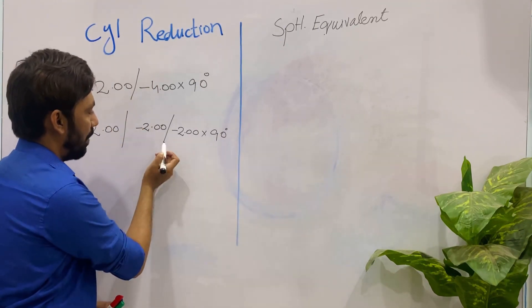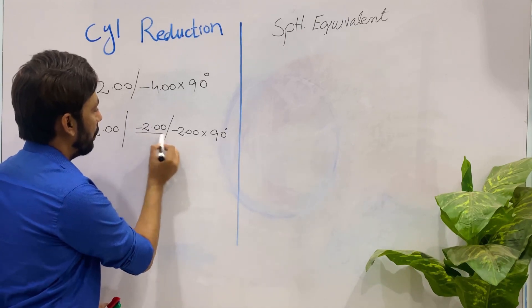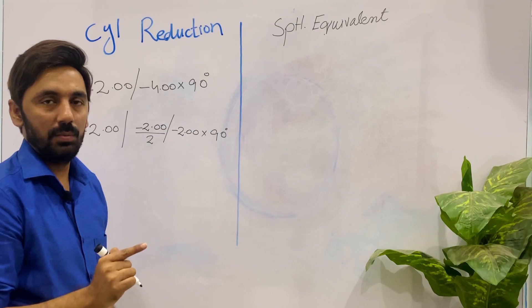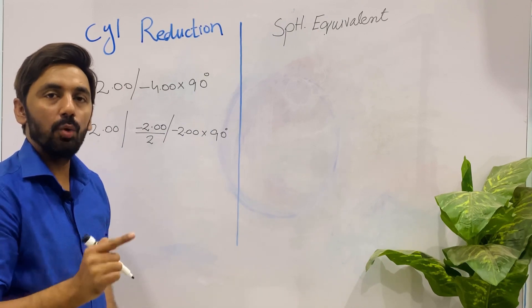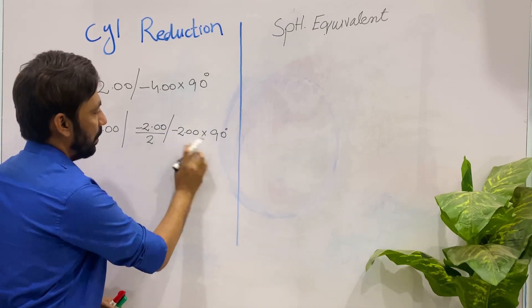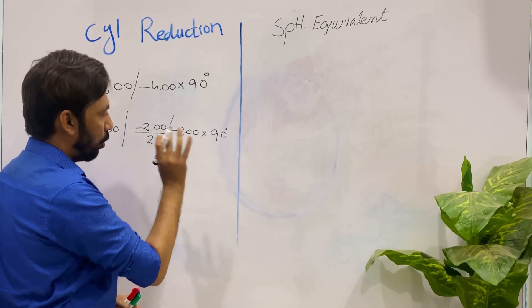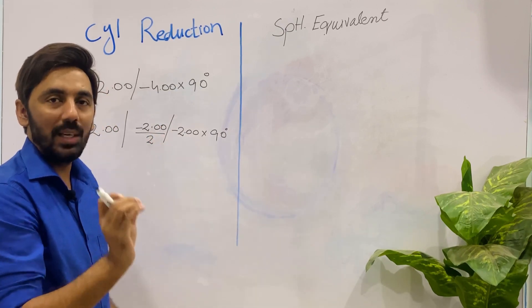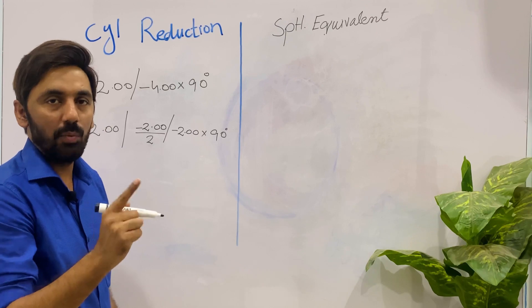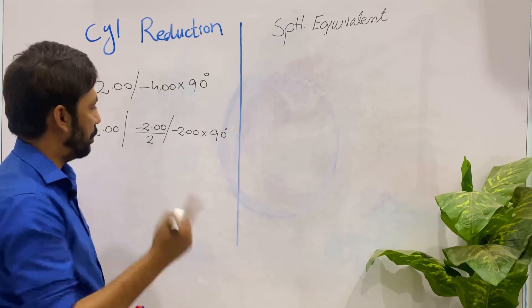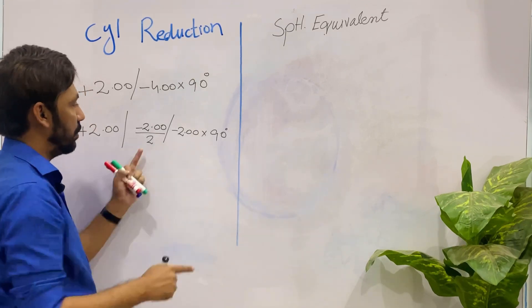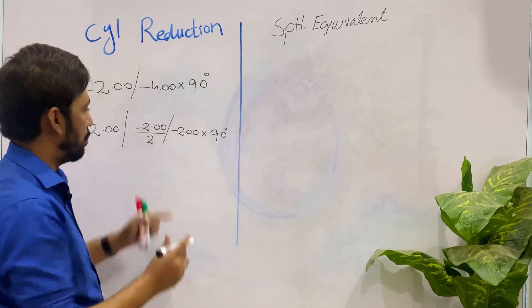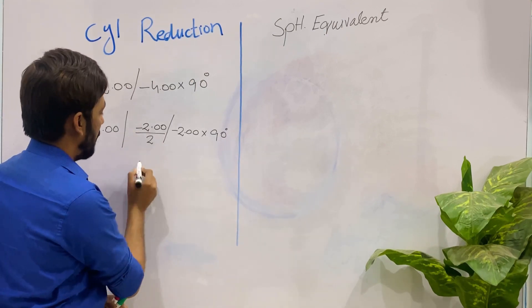The next step is to take half of the cylinder which I want to reduce — not which I want to prescribe. The cylinder I want to prescribe stays the same; I am only altering the cylinder I want to reduce, which is minus two. Half of minus two is minus one.